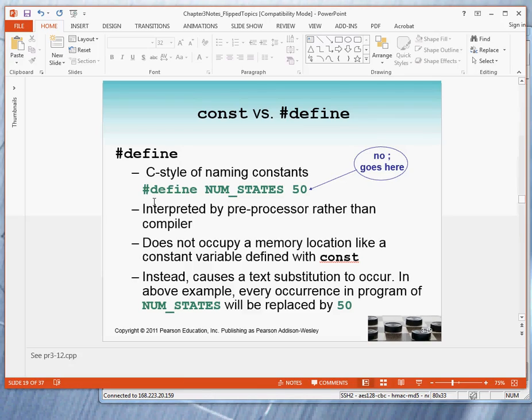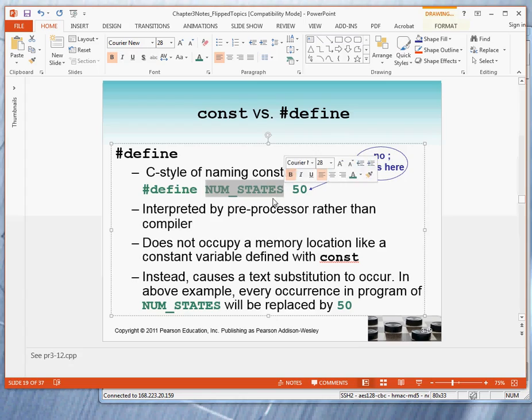And notice in this line, I'm establishing two things. I'm establishing a name followed by a value. And this is not a statement in C++, so there is no semicolon. And what it does, it establishes the fact that wherever num states appears in your program, the compiler treats it as if you had said the number 50.